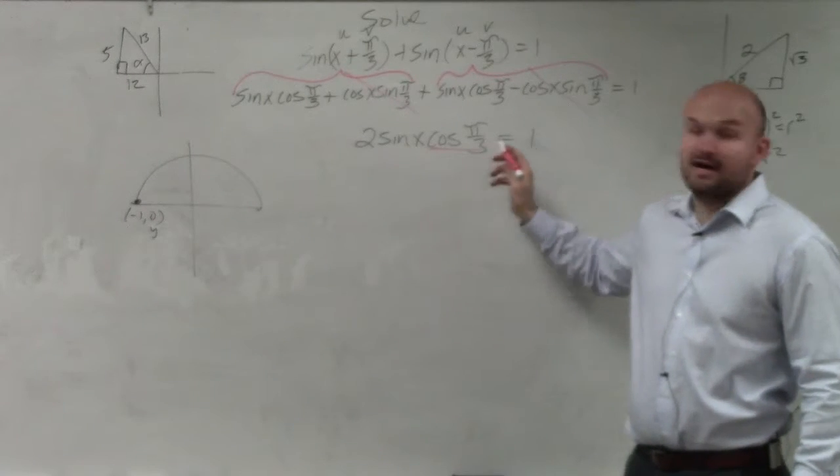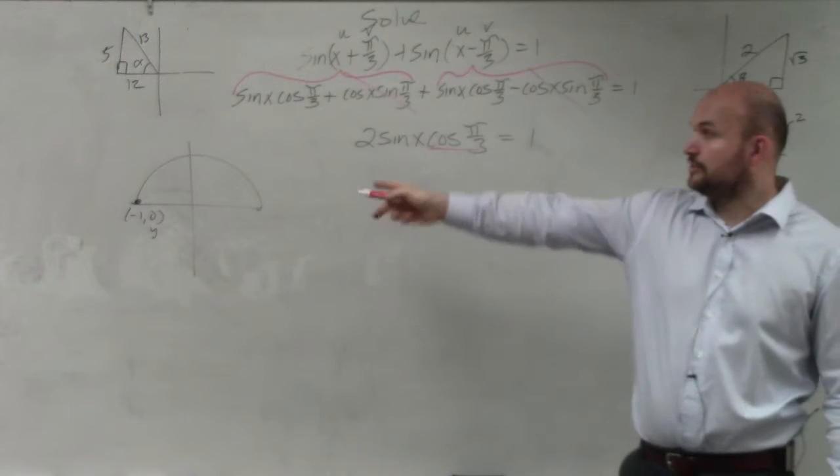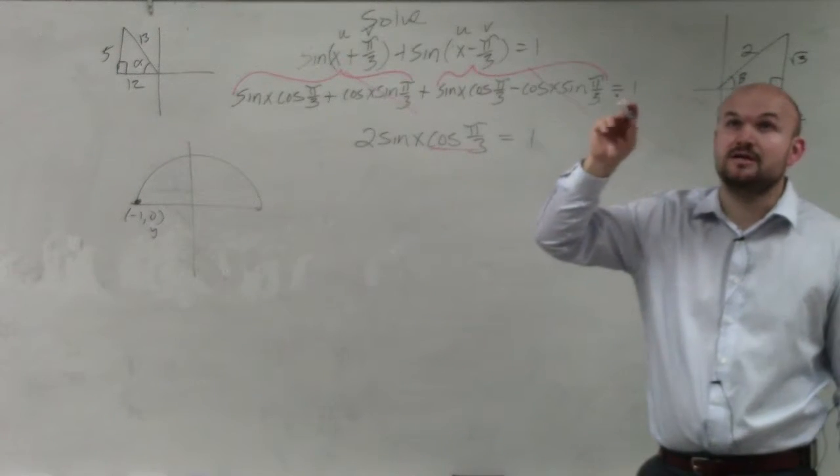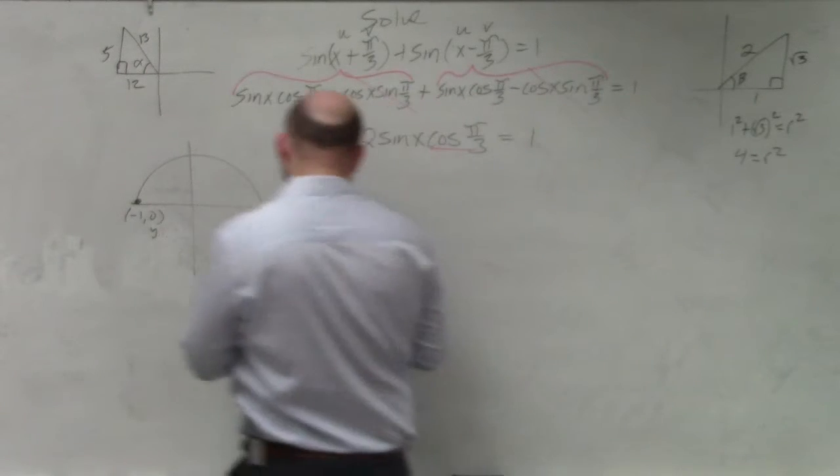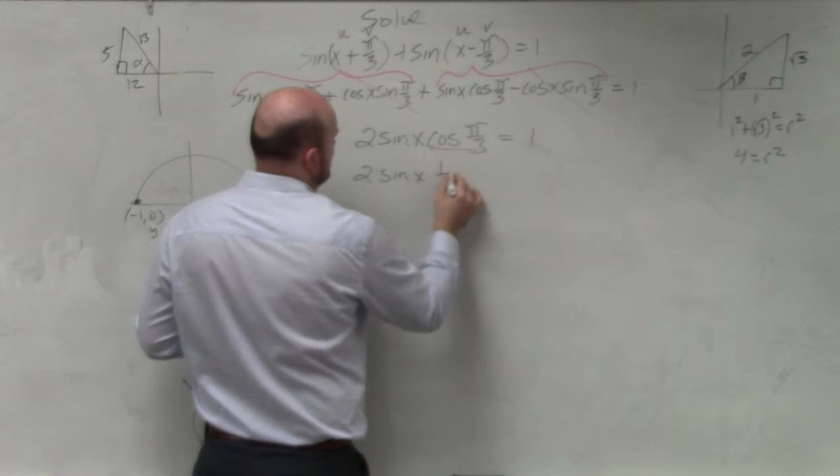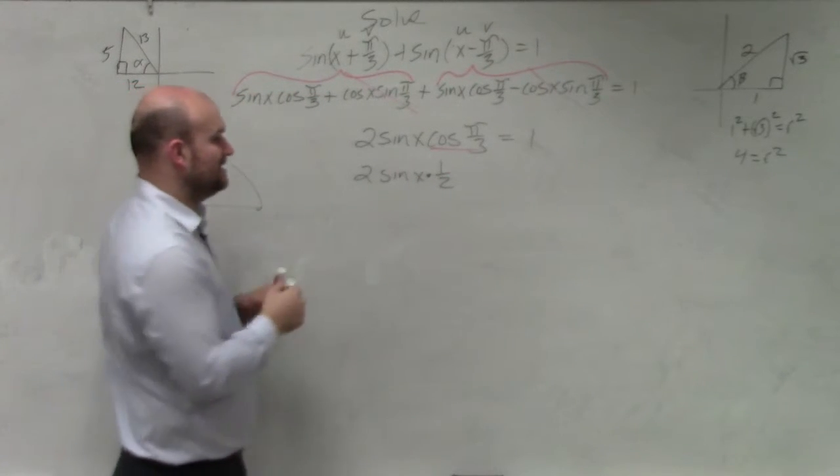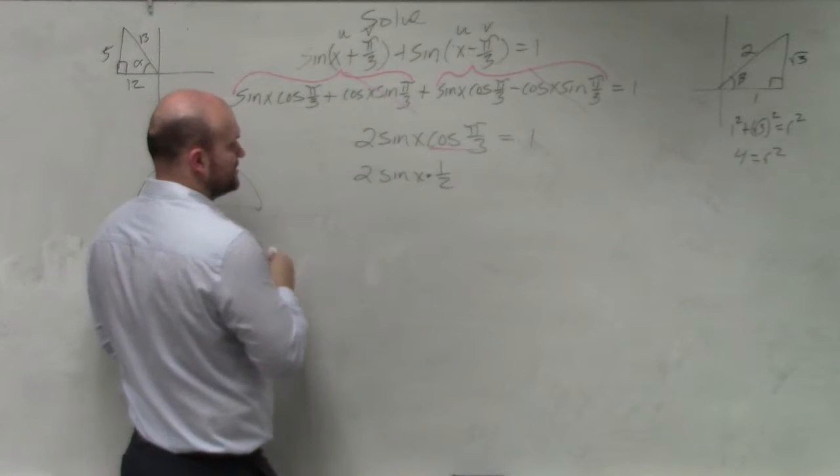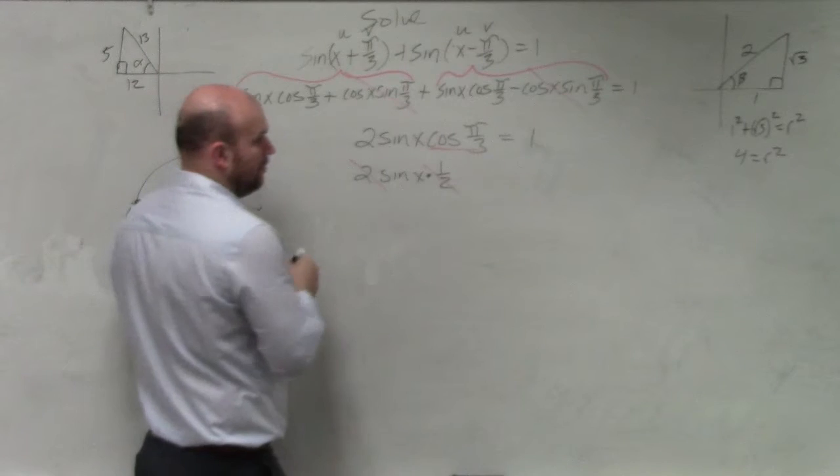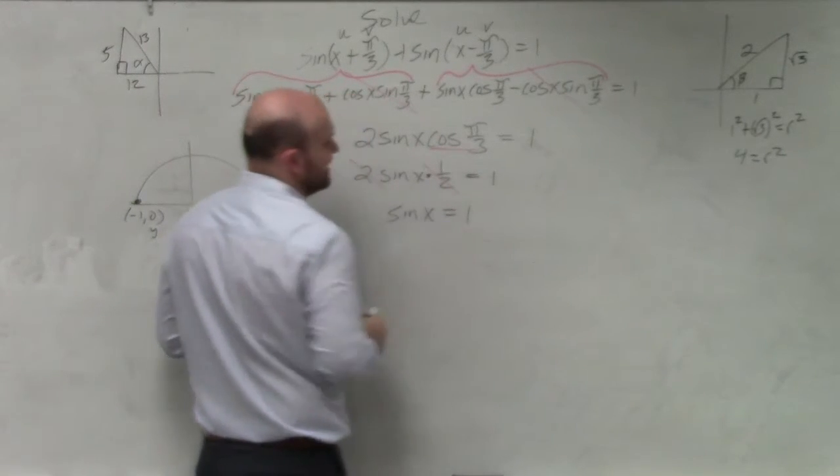Well, I have cosine of pi over 3. Can I evaluate cosine of pi over 3? Knowing my unit circle, pi over 3, that's the same thing as 60 degrees. Cosine is equal to 1 half. So I have 2 sine of x times 1 half. Hopefully you guys just understand that 2 times 1 half is going to equal 1, so sine of x is equal to 1.